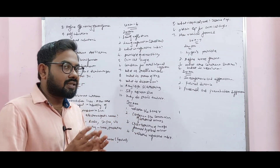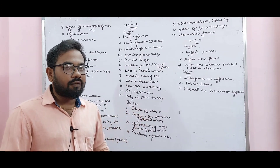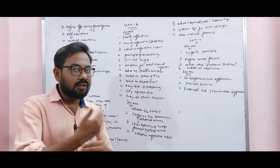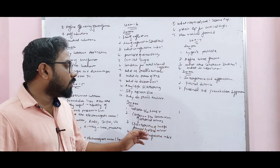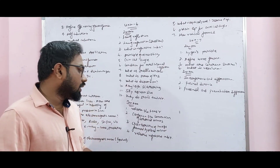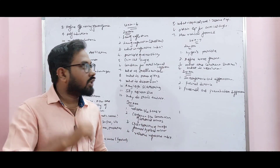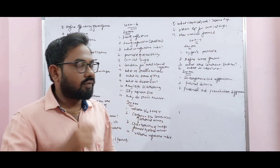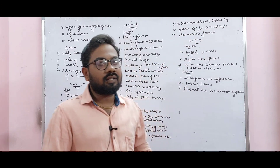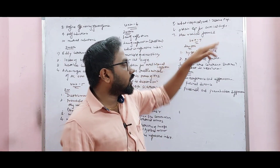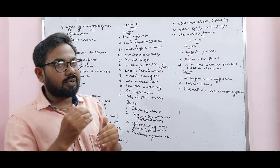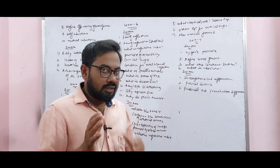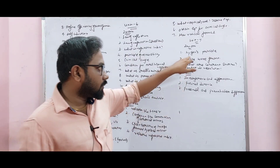3 mark: Relation between f and r. Cartesian sign convention for spherical mirror. Characteristics of image formed by a plane mirror. Relative refractive index, what is optical path. Obtain equation for critical angle. How is a primary rainbow formed? How is a secondary rainbow formed?